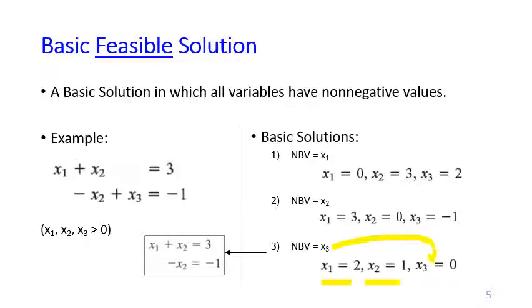We can also set x1 or x2 as non-basic to get the other two basic solutions. The first solution is a BFS because all values are non-negative. The second is not a BFS because x3 equals negative one, which is not allowed. The third is a BFS because all values are non-negative. Only the second basic solution fails to be a BFS due to the negative value.